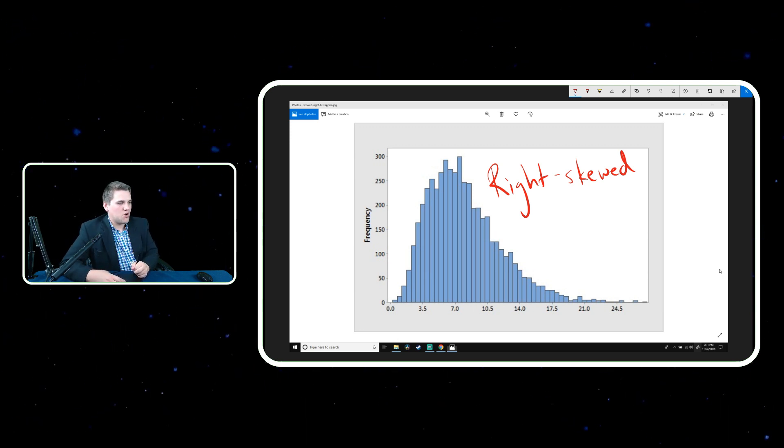When you have a histogram, it's either going to be right skewed or left skewed, or it's not going to be skewed, in which case it would look basically more or less like a bell curve.